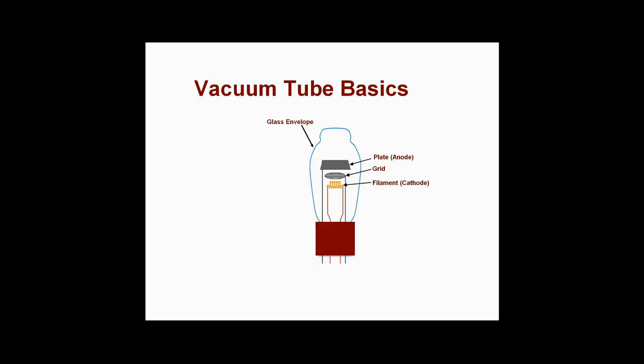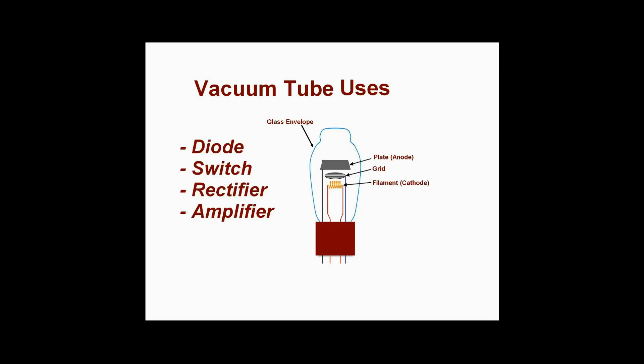There are numerous functions that vacuum tubes performed in early digital computers. A vacuum tube can also be used as a diode. A diode allows current to flow only in one direction. This can be used in devices to convert AC to DC power, convert voltages, or to construct logic gates.